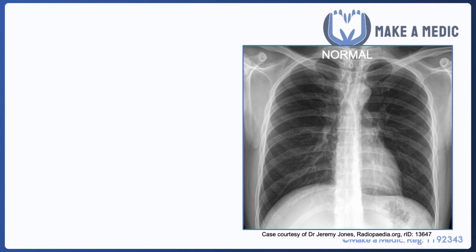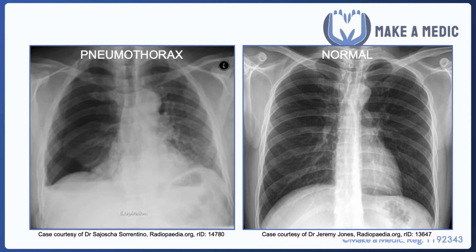Here we have a normal chest X-ray just to help orientate yourself, and here we have a pneumothorax. You can see that the edge of the lung is visible away from the edge of the thorax, and there's a very dark sliver on the outside which doesn't contain any vascular markings. Remember that on an X-ray, air will appear black or very dark, so the presence of a very dark strip along the peripheries of the film would be suggestive of a pneumothorax.